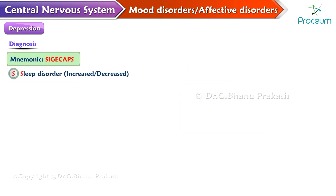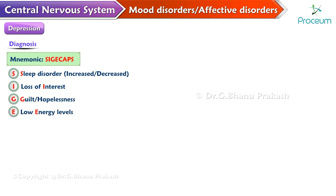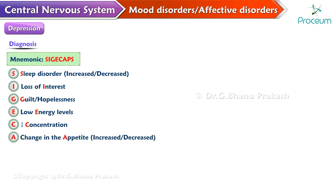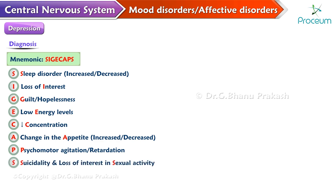S is for either increased or decreased sleep. There is usually loss of interest. G stands for guilt or hopelessness. E is for low energy levels. C is for decreased concentration. A is for change in appetite, which can be either increased or decreased. P is for psychomotor agitation or psychomotor retardation. And the last S is for suicidality and loss of interest in sexual activity, which is loss of libido.